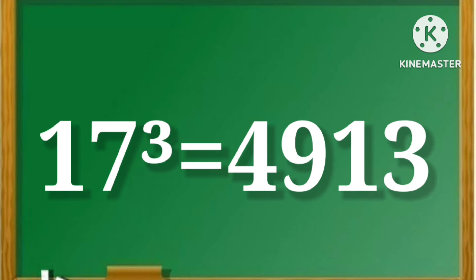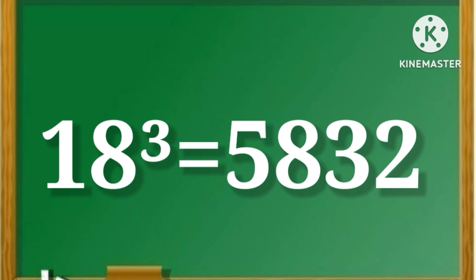17 cube is equal to 4930. 18 cube is equal to 5832.